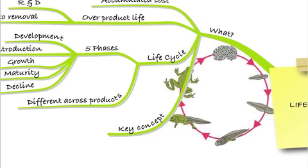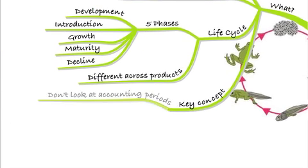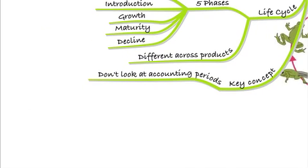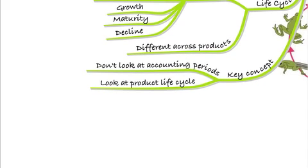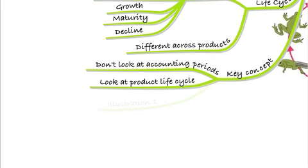The key concepts we need to remember when looking at life cycle costing is that we are no longer looking at accounting periods. We're not thinking about periods of time — a month, a year, etc. What we're doing is looking at the whole of the product's life cycle. We're going to estimate what the costs are going to be across that entire life cycle, and that will enable us to set a better price for our product.